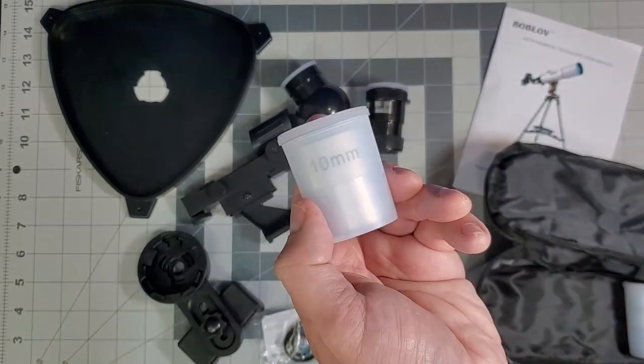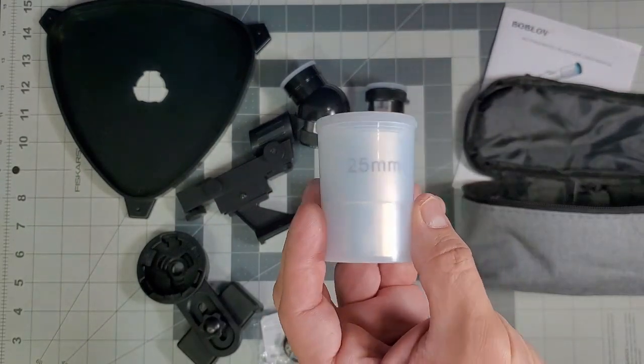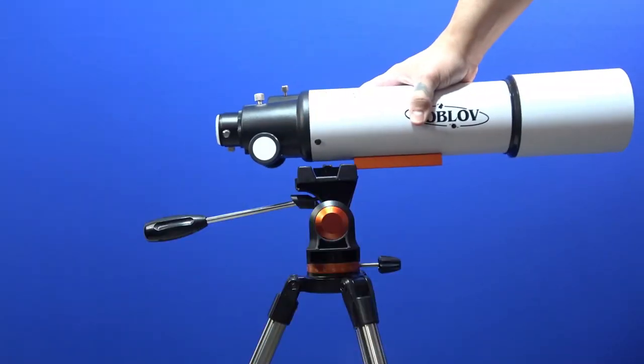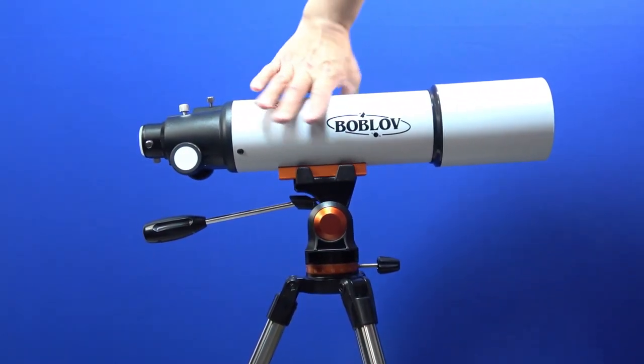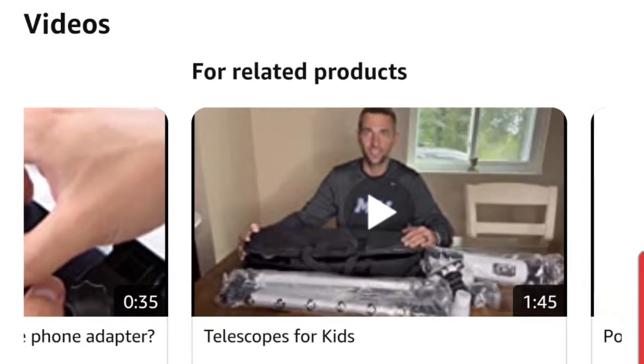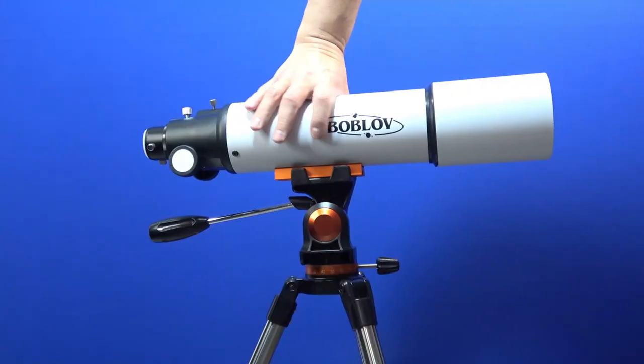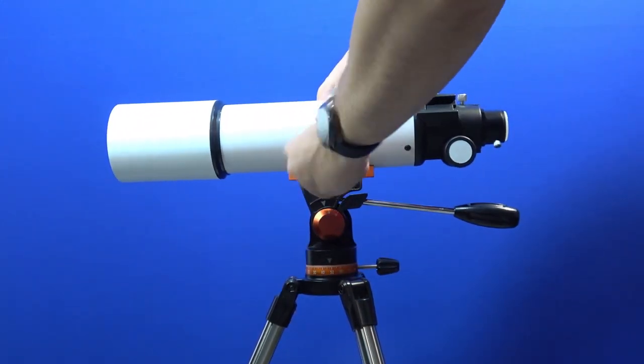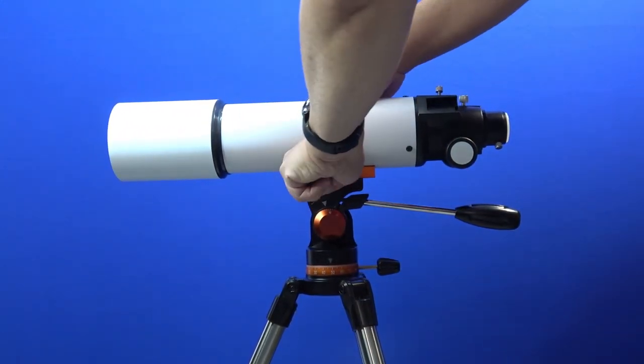Setup is simple and pretty much self-explanatory. If you get stuck, there are a ton of instructional videos on Amazon that will make using the Bob Lob telescope extremely easy, especially if you're a beginner astronomy enthusiast. It literally took me about three minutes to set everything up and start using.